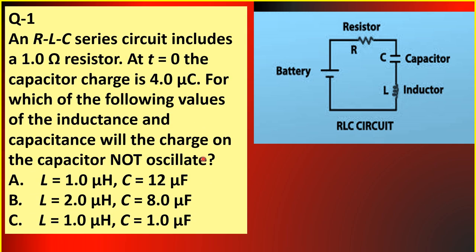To check your understanding, we now have question number 1. An RLC series circuit includes a 1.0 ohm resistor. At time equals zero, the capacitor charge is 4.0 microcoulomb. For which of the following values of the inductance and capacitance will the charge on the capacitor not oscillate? Letter A: L equals 1.0 microhenry and C equals 12 microfarad. Letter B: L equals 2.0 microhenry and C equals 8.0 microfarad. Letter C: L equals 1.0 microhenry and C equals 1.0 microfarad. We'll have the answer and solution in just a short while.